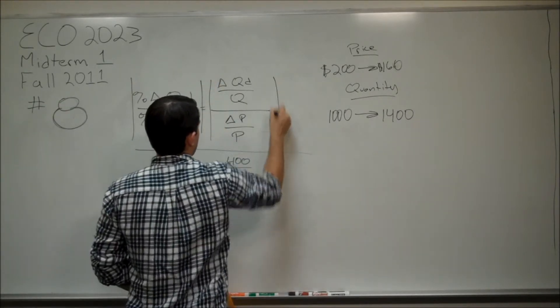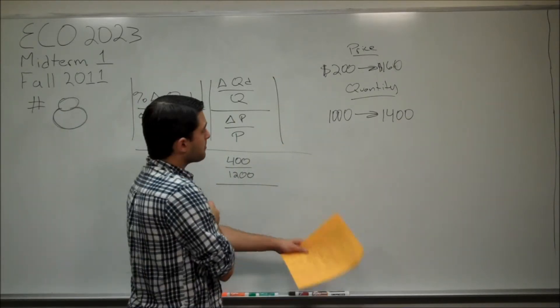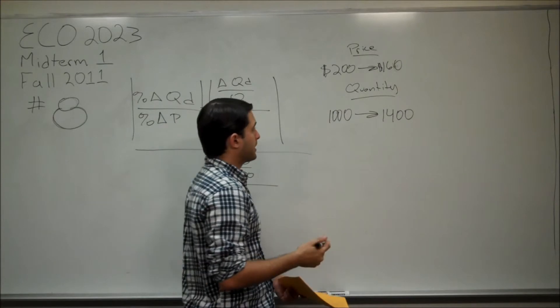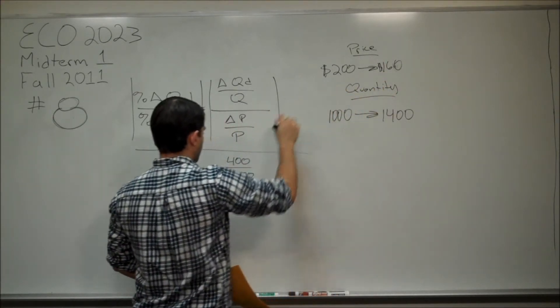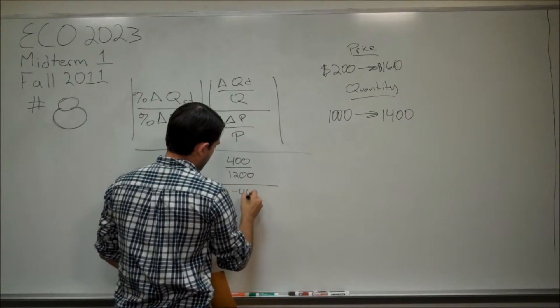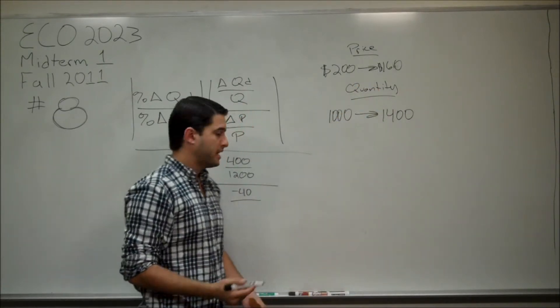These are absolute values. So, it ends up not mattering whether it's positive or negative. So, here we have a drop from $200 to $160. So, that's minus $40. And then the midpoint between $200 and $160 is $180.